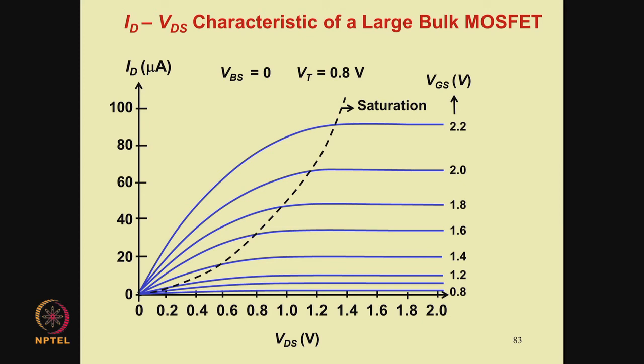Let us continue our discussion on the qualitative theory underlying the DC model of a large uniformly doped bulk MOSFET. So far we have done the following: we have explained the shape of the ID-VDS curves and things such as why the current saturates beyond some point, why the saturation voltage goes on increasing, and why the current rises rapidly for small values of VDS.